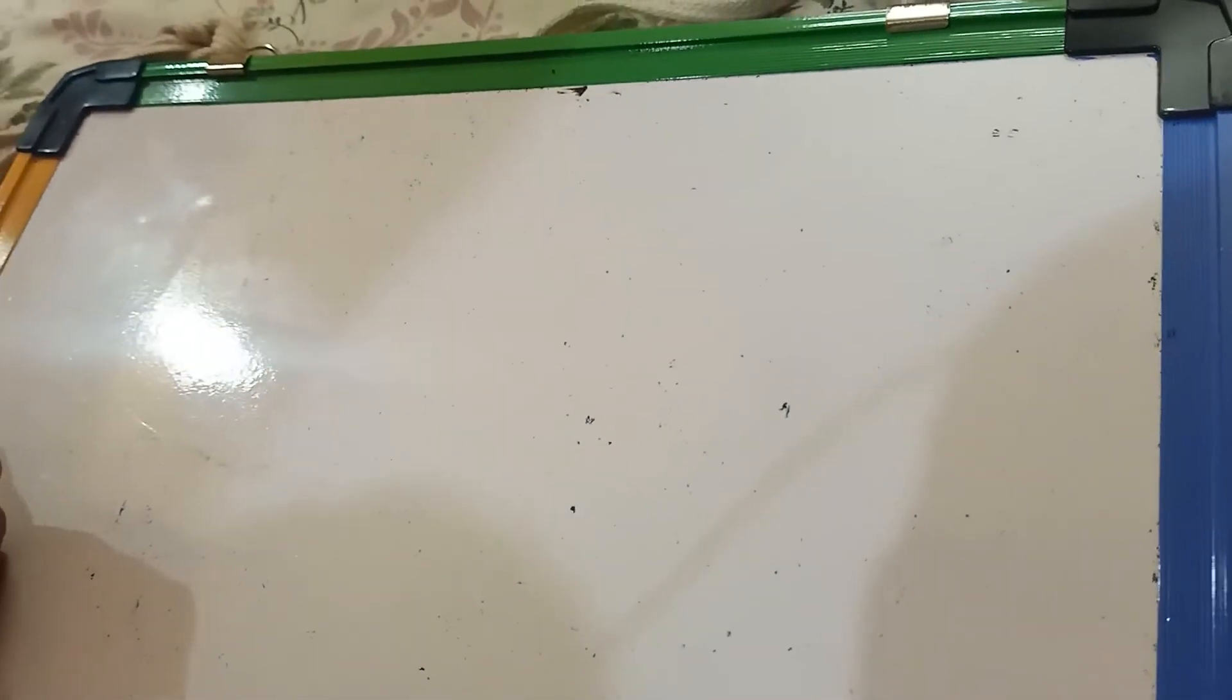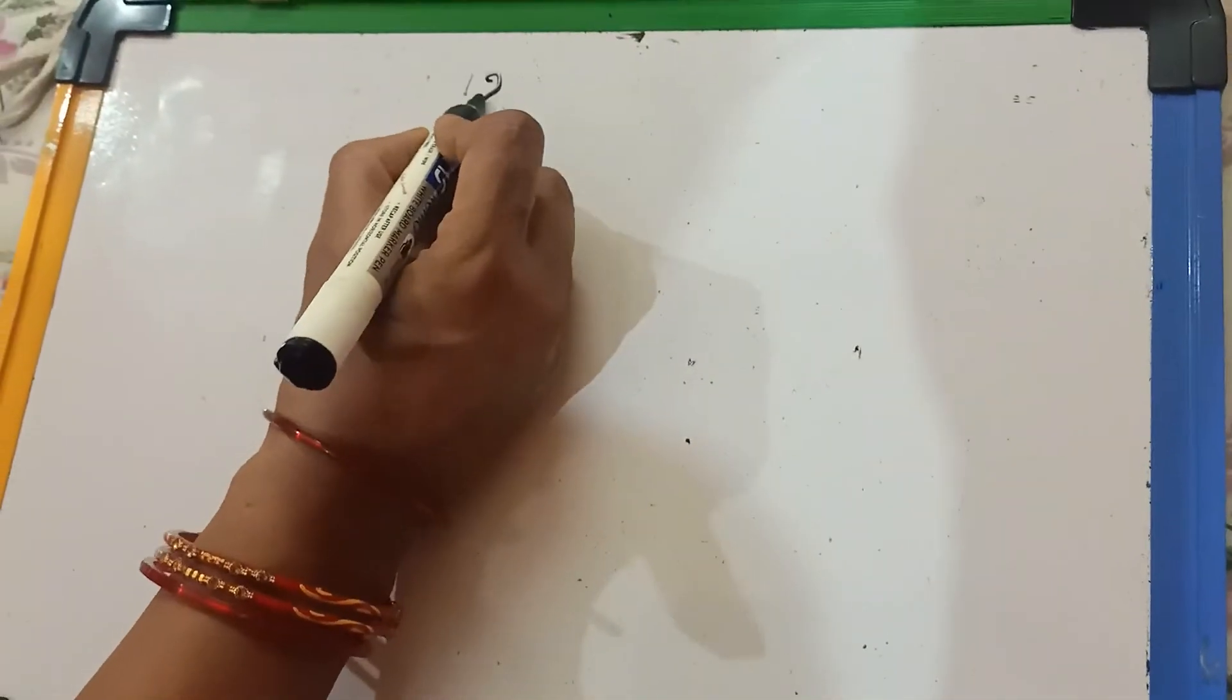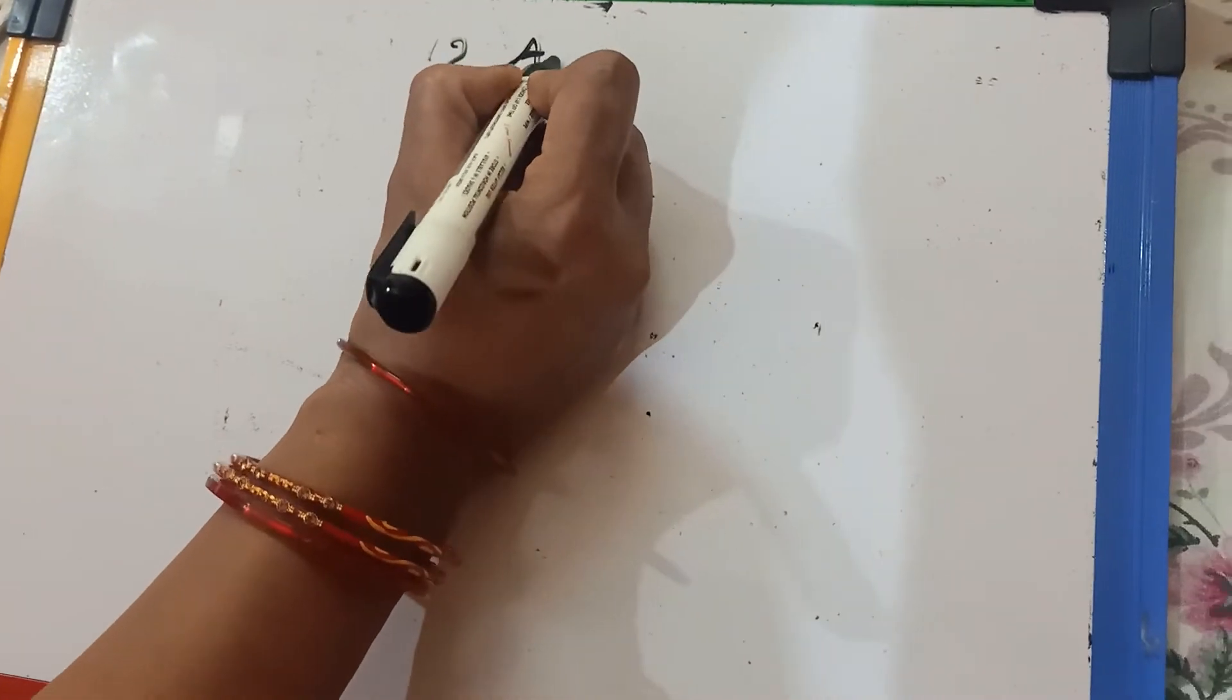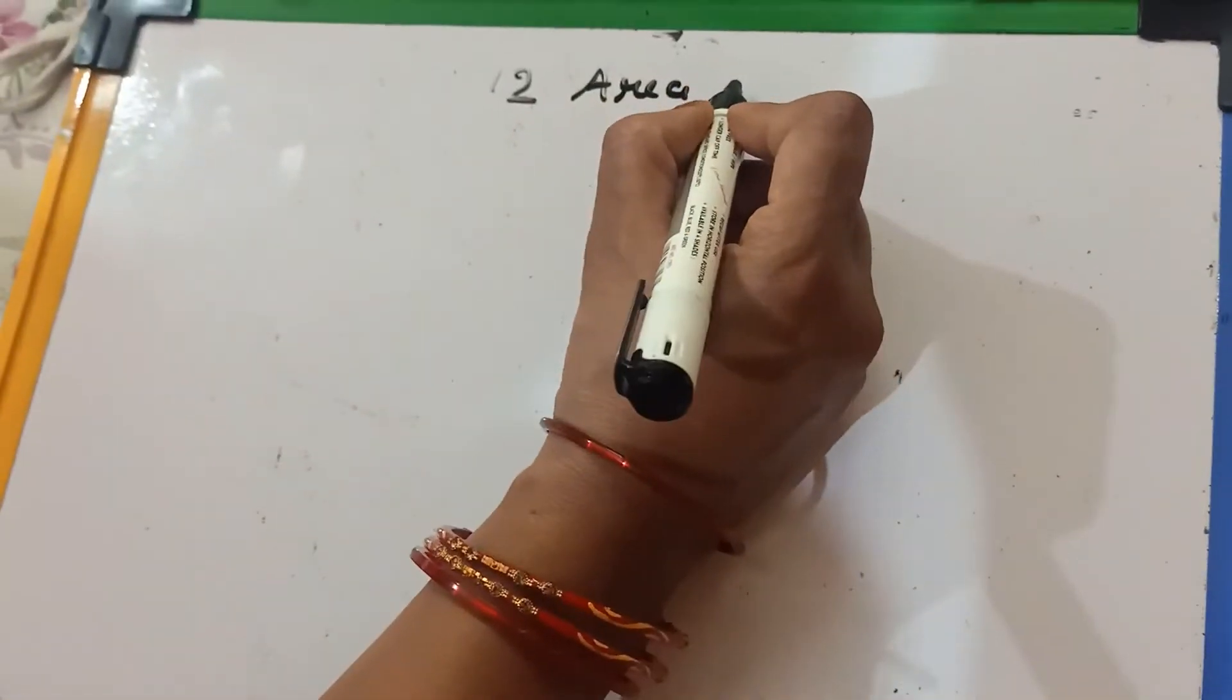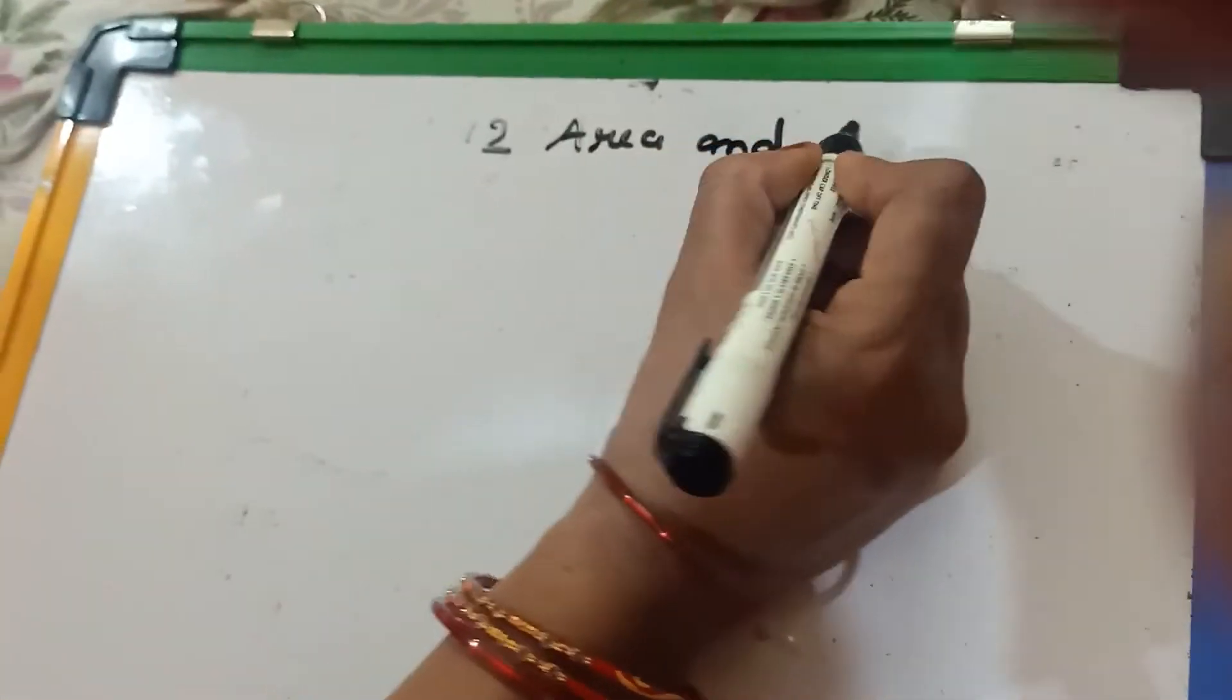Hello students, today I am going to start a new topic from your math book. It is Area and Perimeter, Chapter 12, Area and Perimeter.